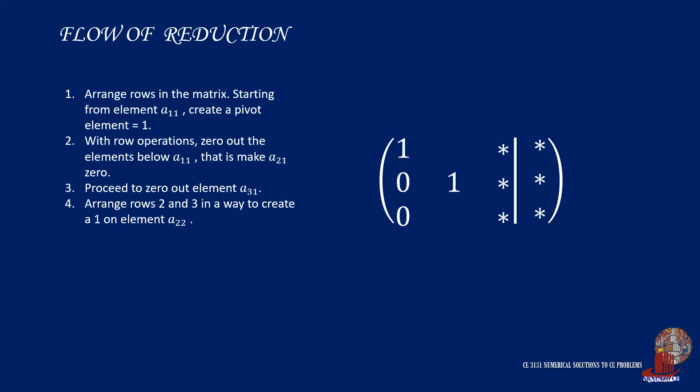After identifying element A22 as 1, we zero out the other elements in the second row, and those elements involved are A12 and A32.